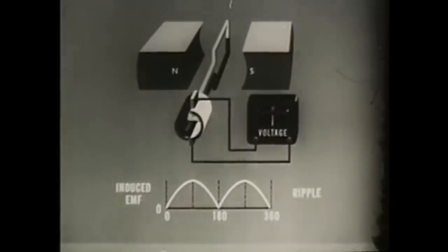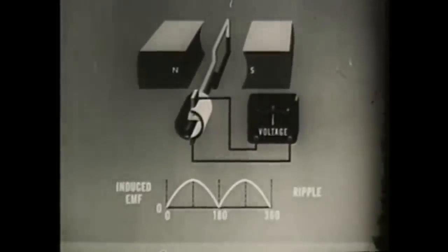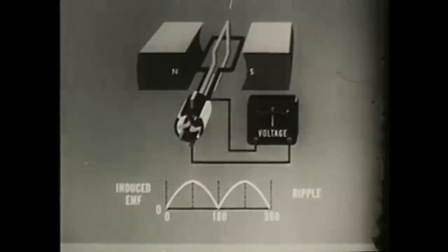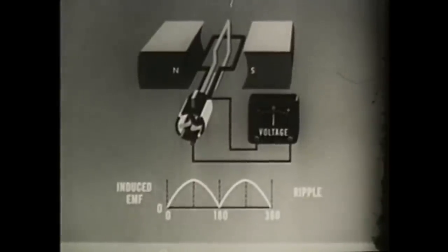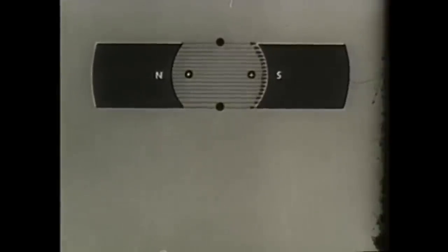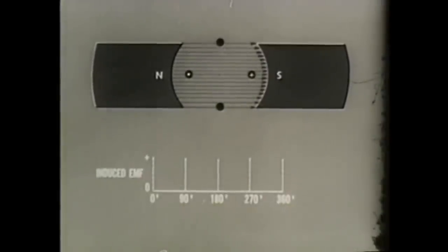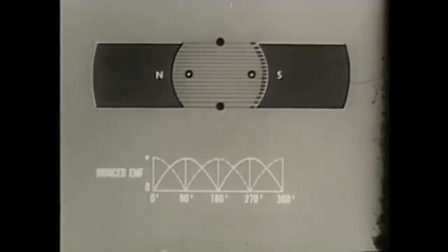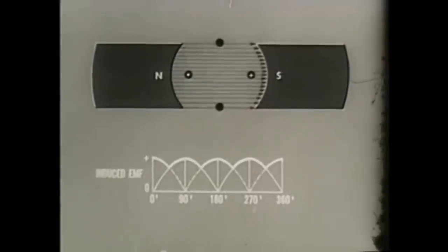This ripple can be reduced by adding more loops and more commutator segments to the existing armature. Two loops at right angles connected to four commutator segments provide two outputs instead of one. These outputs are 90 degrees displaced or apart which combine to smooth the DC output. However, even with two loops and four commutator segments, the rectified curve is still somewhat irregular.